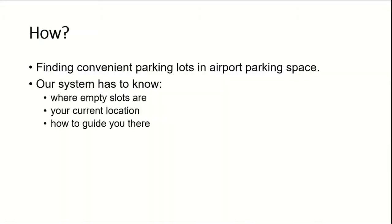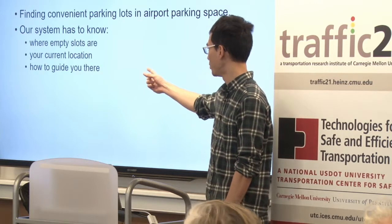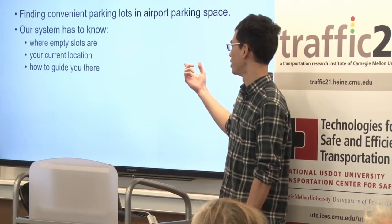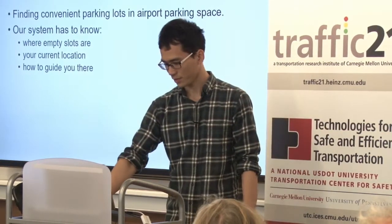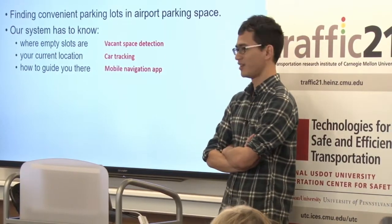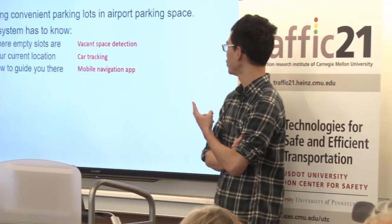How do we find convenient parking slots for our users? The parking slot should be optimal — near the building, not taking too long to drive to, and minimizing the distance you have to walk. To achieve this, our system needs to accomplish three things: first, know where the vacant parking slots are; second, know the current location of the user; and third, find the best way to guide the customer to reach the destination parking slot.